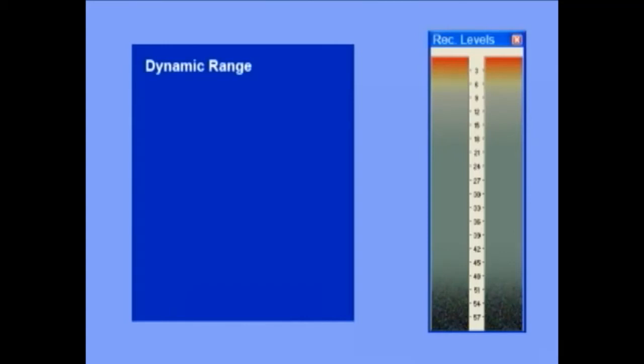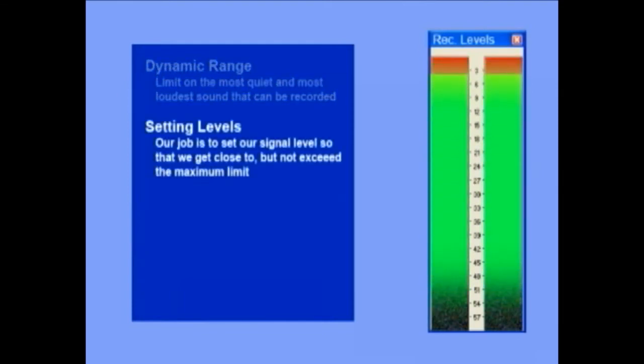The range of levels that a recorder can capture is known as its dynamic range. That's the limit on the most quiet and most loudest sound that it can record. Our job is to set the levels of our inputs so that we get close to, but not exceed the maximum limit.